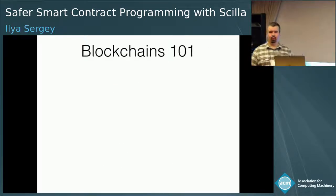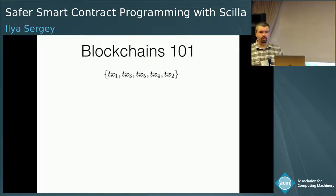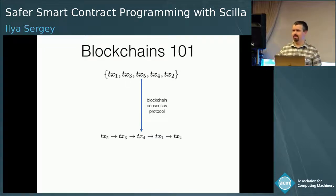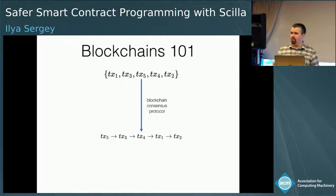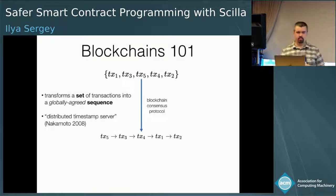All of you have obviously heard what blockchains are. Blockchains are actually a pretty easy idea at the core. We have an unordered set of events — let's call them transactions — and we want to get an ordered set of events. That is essentially everything that blockchains do. They run a consensus protocol, and this is an unordered set that multiple parties are going to agree on.